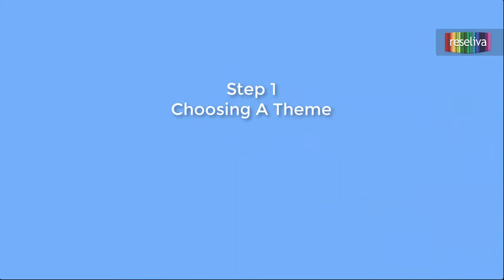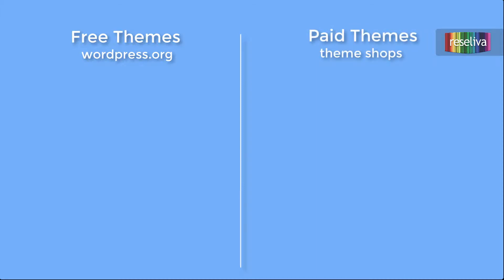Step 1: Choosing a Theme. This is the most difficult and comprehensive step of building a WordPress site. There are two alternatives: free themes at the WordPress.org site, and premium themes — paid themes — at the various theme shops. Both options have advantages and drawbacks.